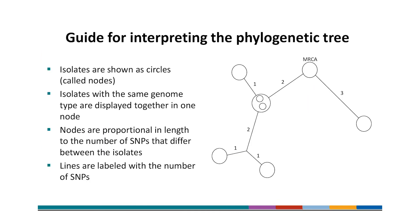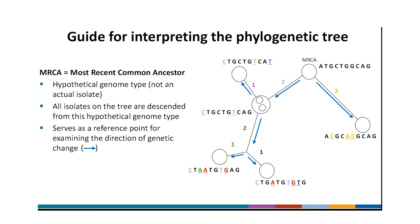Here is a guide for interpreting the phylogenetic tree. On this tree, the isolates are shown as circles called nodes, which would usually be labeled with the isolate's accession number. Isolates that have the same genome type are displayed together in one node. Nodes are connected by lines that are proportional in length to the number of SNPs that differ between the isolates, and the lines are labeled with the number of SNPs. You will see that the tree also has a node labeled MRCA, which stands for most recent common ancestor. The MRCA is not an actual isolate, but a hypothetical genome type from which all isolates on the tree are descended. The MRCA serves as a reference point for examining the direction of genetic change, shown with blue arrows.